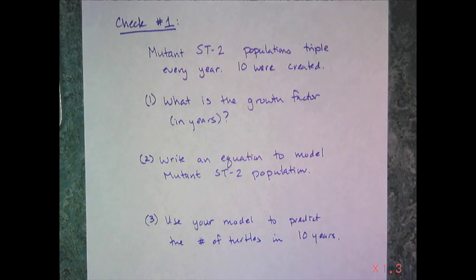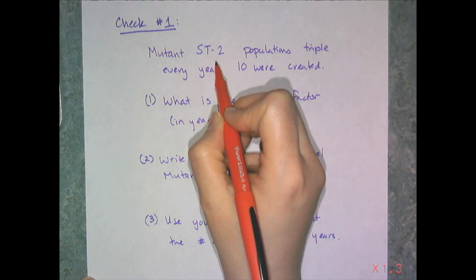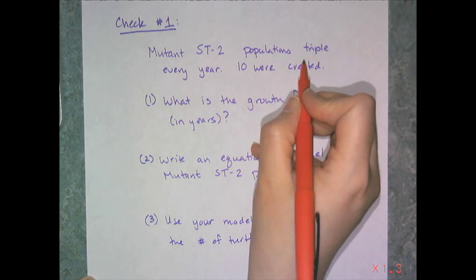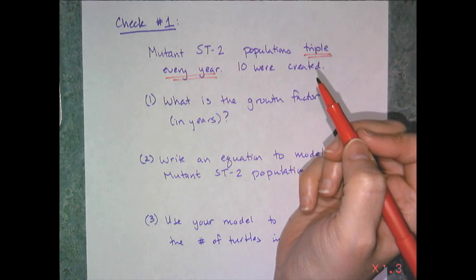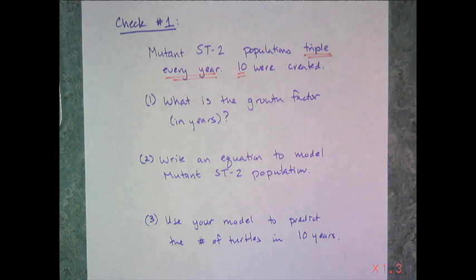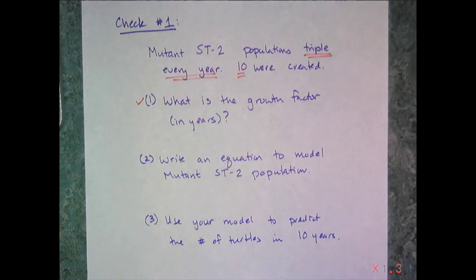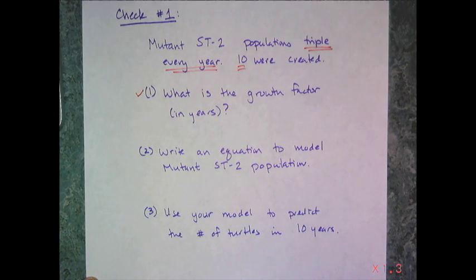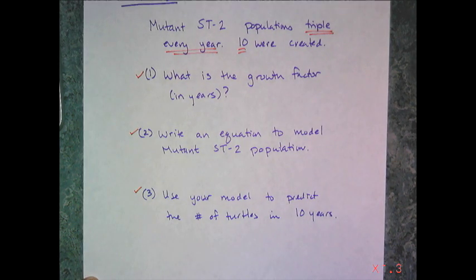Now, for the first check, we have the mutant ST-2 population, so a second version of snapping turtle, whose population triples every year. So they don't grow quite as fast because that last population was a fiasco. And then 10 were created. And so I have three questions for you. One, what is the growth factor in years? Second, I want you to write an equation to model that new turtle's population. And finally, I want you to use your model to predict the number of turtles there will be in 10 years.